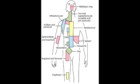What is the primary lymph node drainage site for the upper limbs and the lateral breast? Upper limbs and lateral breast drain into the axillary lymph nodes.